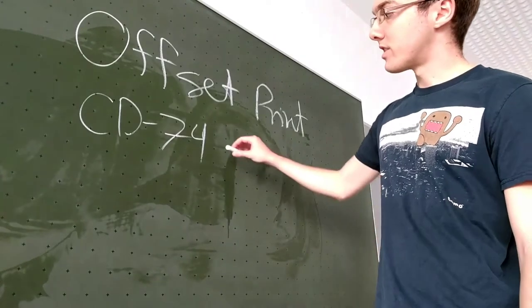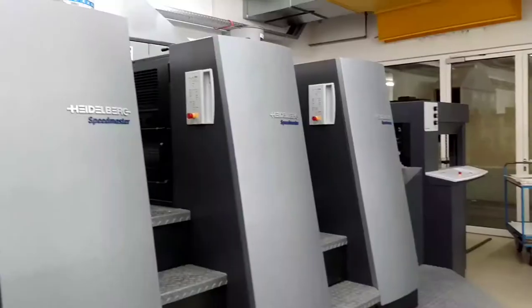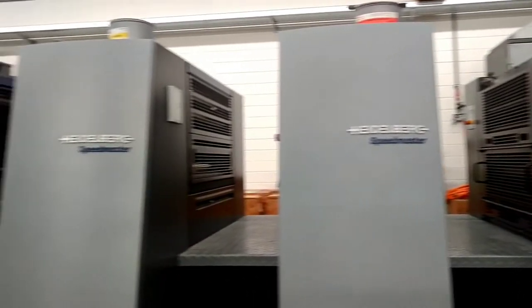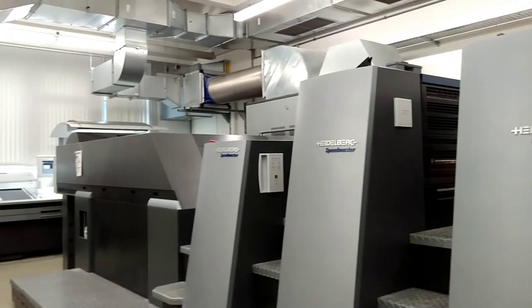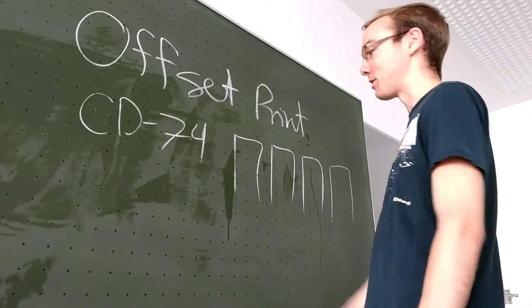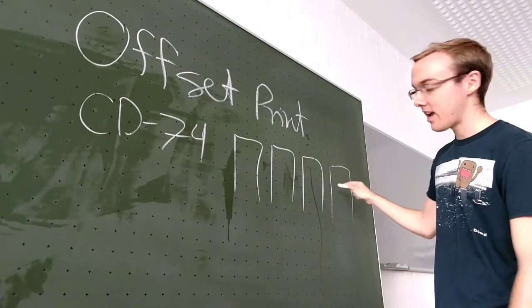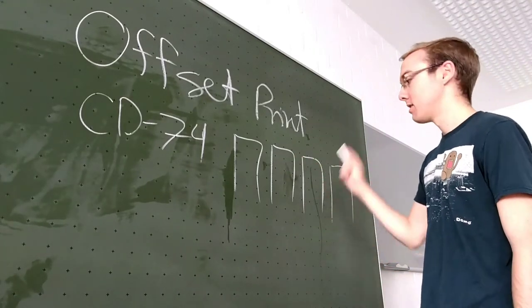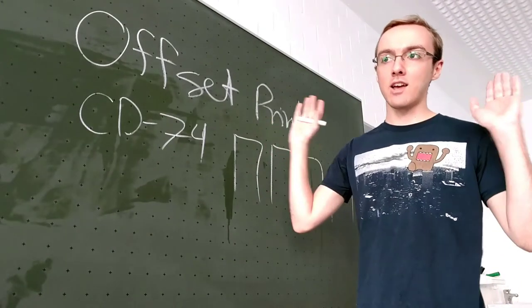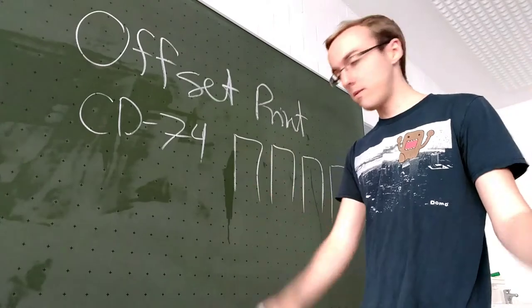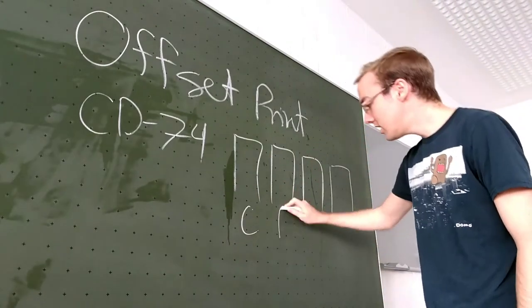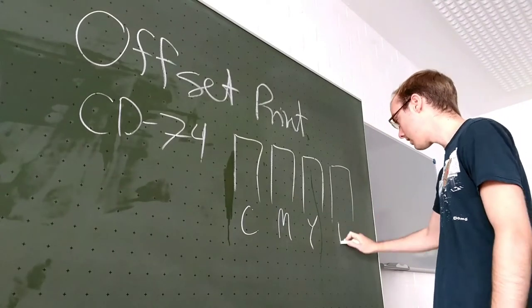And you're going to see that it has these things that look like towers. And I'm going to say them in German because we're going to learn some German words, because I sometimes don't know the English words. I think these in English are called print engines, but in German they're called Druckwerke. And you're going to see that the machine actually has six different Druckwerke.